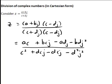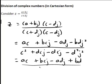And we simplify this at the next step by remembering that j squared is always equal to negative 1. So ac plus bcj minus adj minus bdj squared thus becomes minus bd times negative 1, so that will become plus bd.